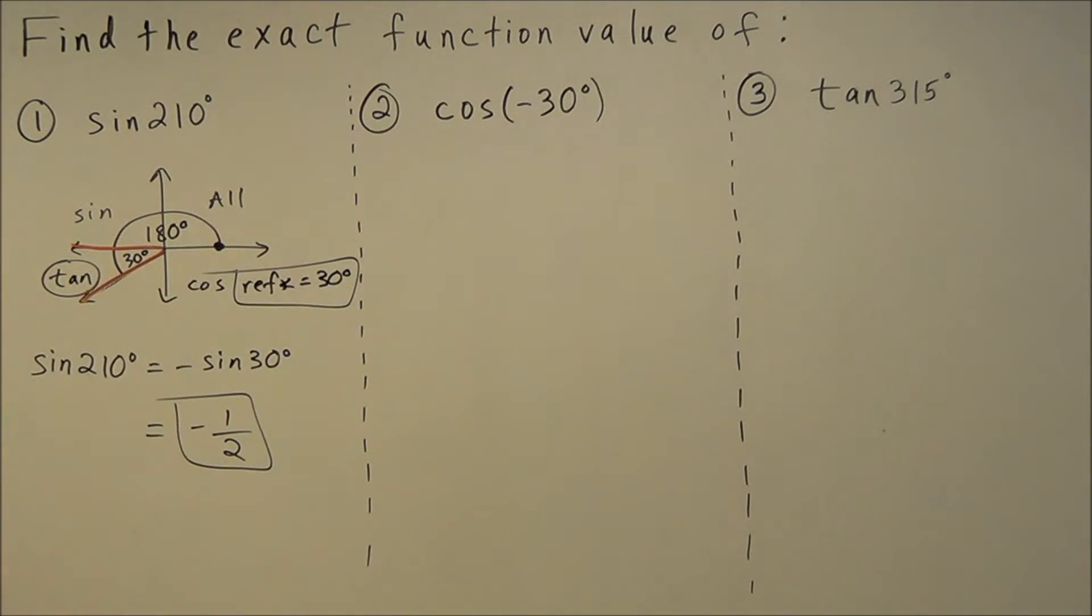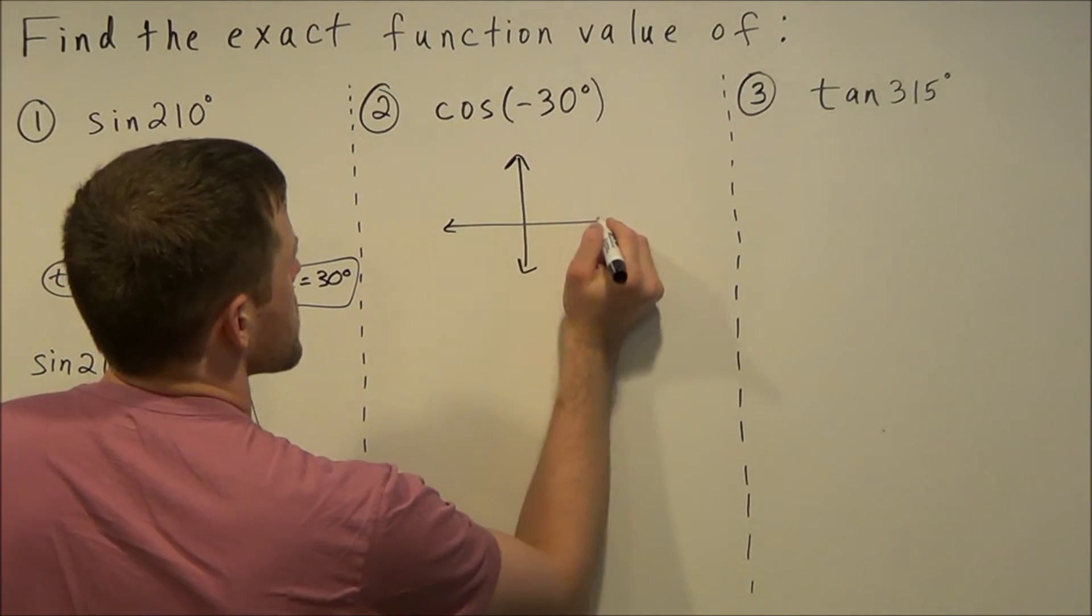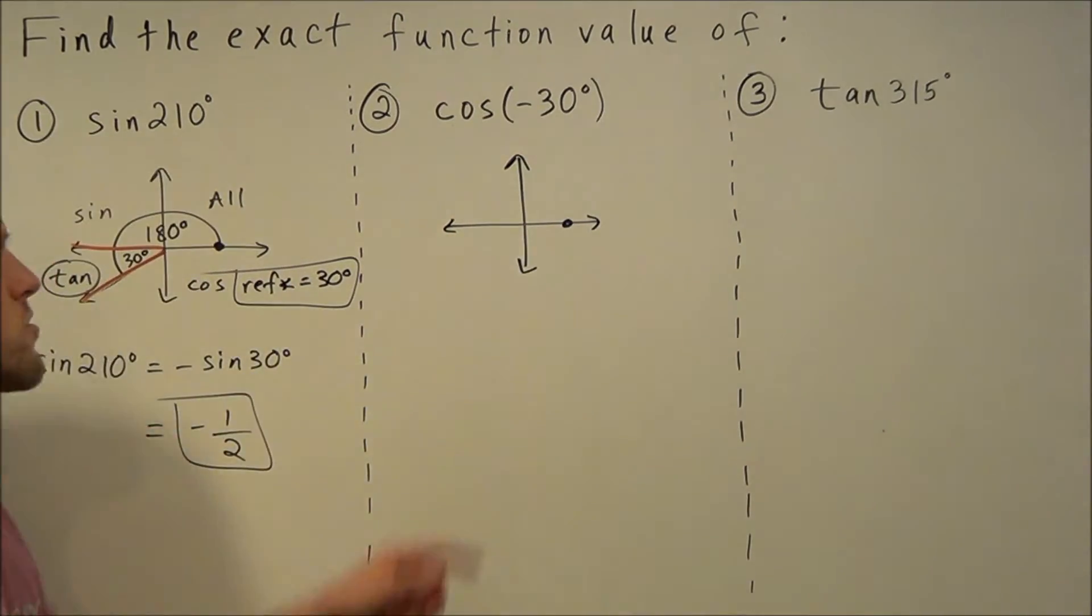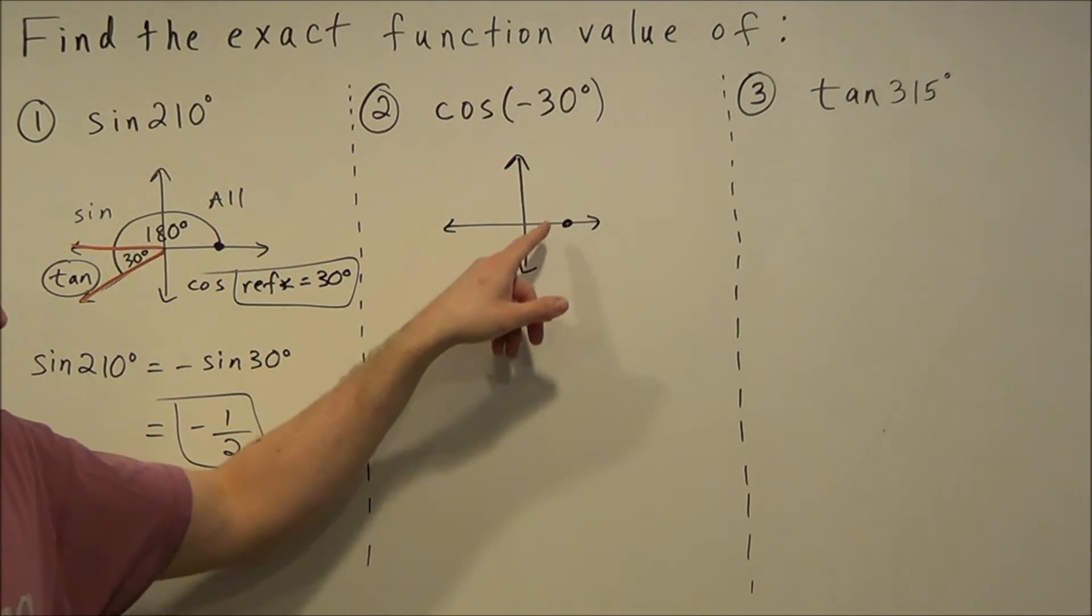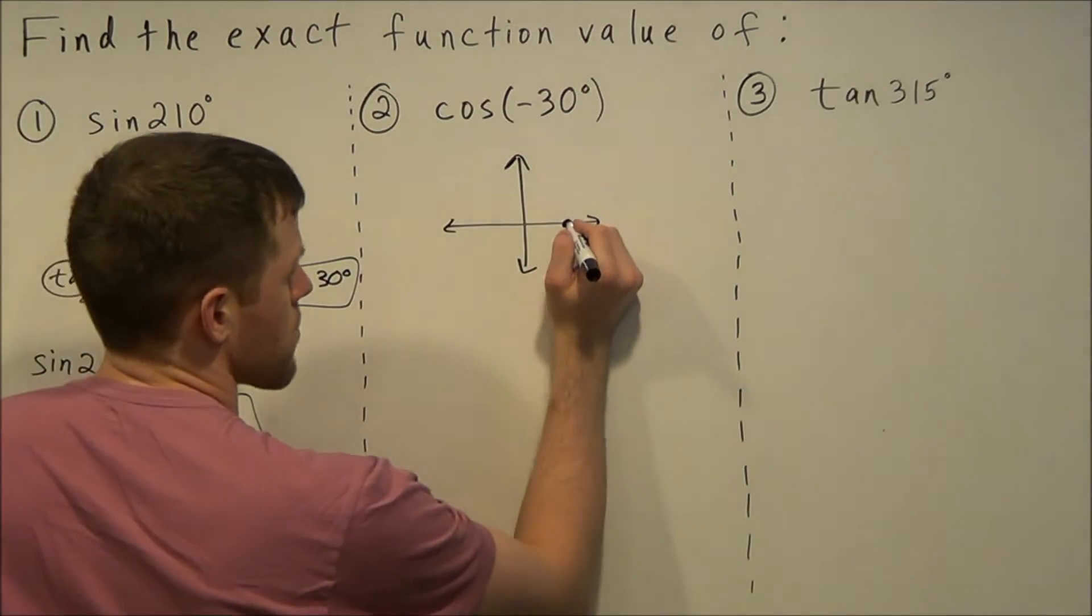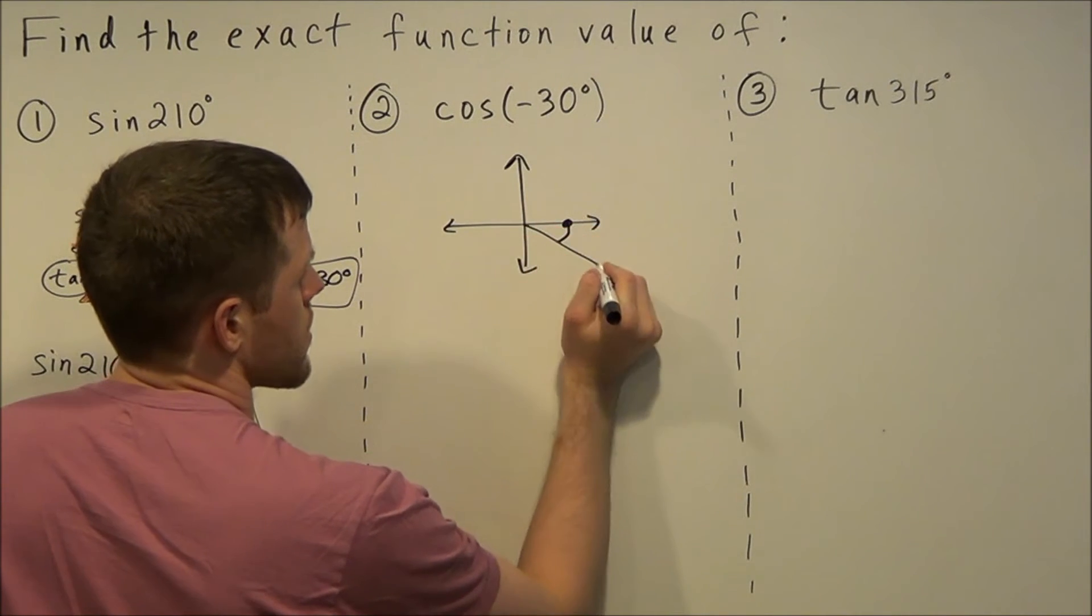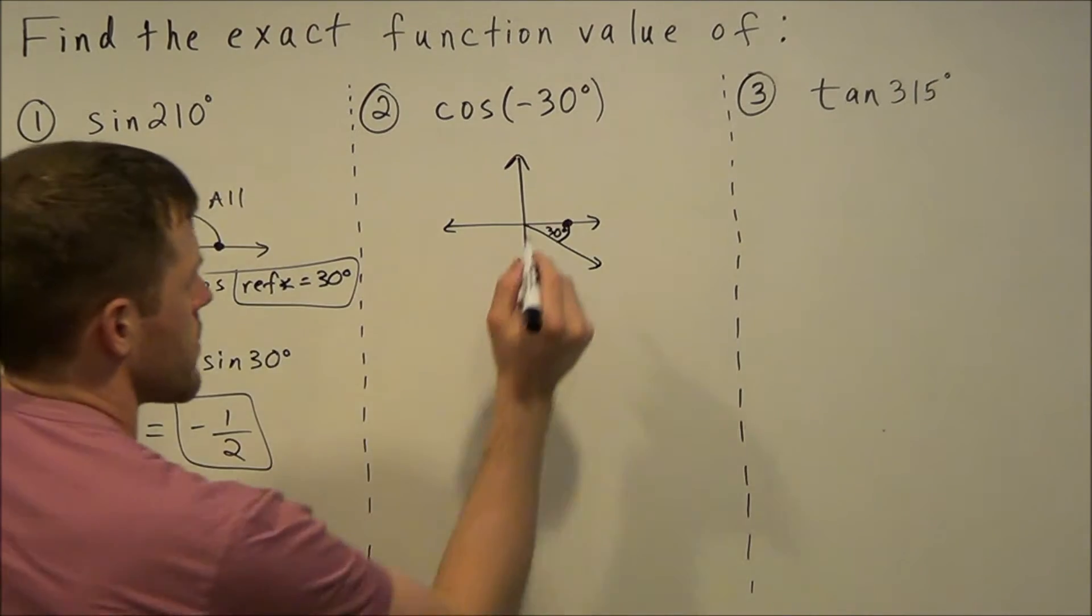For the second example here, once again we're going to draw this out. Negative 30 degrees, remember angles typically go counterclockwise, so if we go negative 30 we have to go clockwise as opposed to this direction here. We're going to go 30 degrees this way, going into quadrant four.